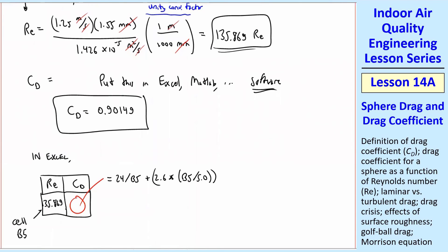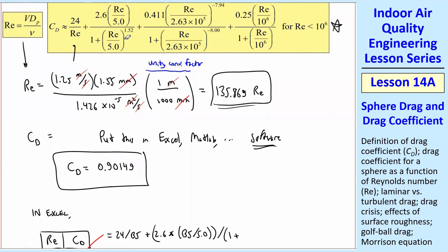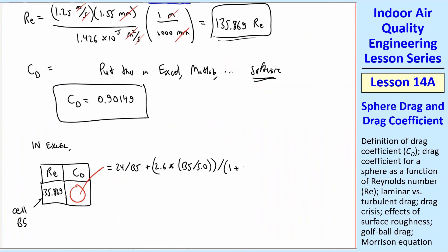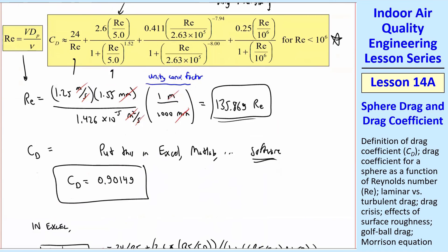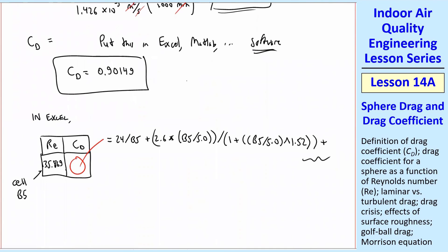2.6 times Reynolds number B5 divided by 5.0. And then close both parentheses. That gives me my numerator. And now the denominator. You've got to be very careful with parentheses in Excel. So we want Reynolds number over 5.0 to the 1.52 exponent. I'm going to put two parentheses B5 divided by 5.0, close parentheses. And then the little hat gives you the exponent of 1.52. And then I'm going to close that parentheses. You need to close the third one as well. And then you're done with that whole denominator and that whole second term plus. And you've got to do this carefully for the other terms.